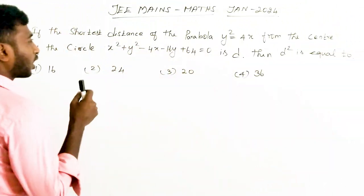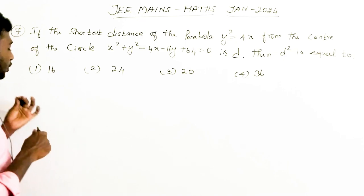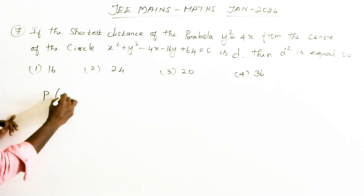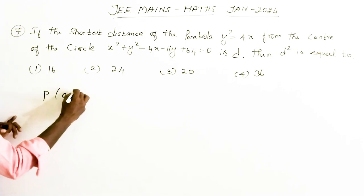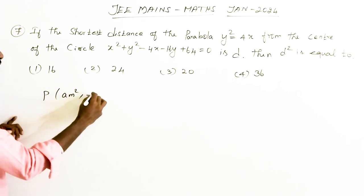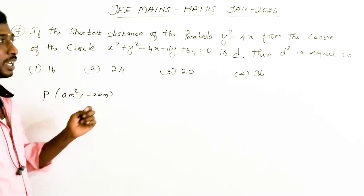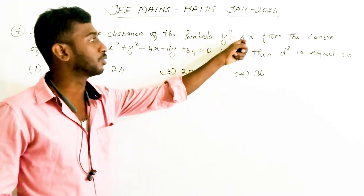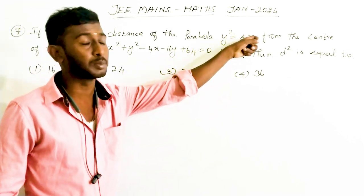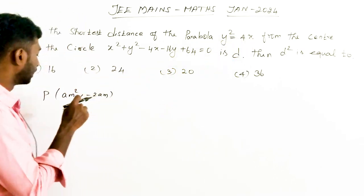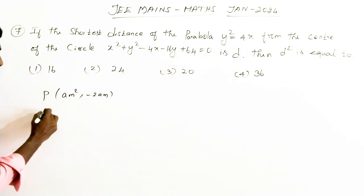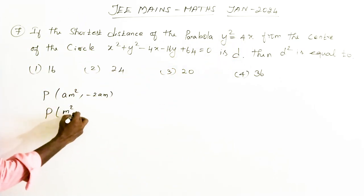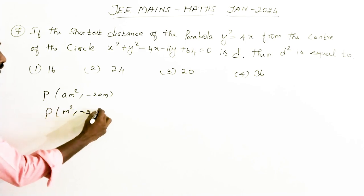First, I am going to take one point on the parabola. The parametric point is (am², -2am). For y² = 4ax, the value of a is 1 here. So I am going to substitute: the point on the parabola is (m², -2m).